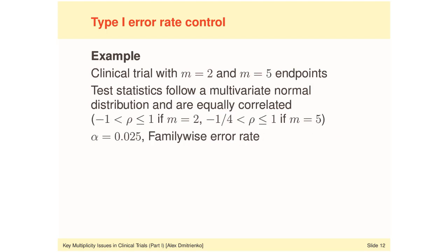As an illustration, consider a clinical trial with two or five endpoints — two extreme cases. We assume that the hypothesis test statistics follow a standard multivariate normal distribution under the global null, meaning all hypotheses are true. For simplicity, we assume the test statistics are equally correlated, giving a compound symmetry correlation structure. With two endpoints, the common correlation coefficient ranges between negative 1 and positive 1. With five endpoints, the lower bound for the common correlation coefficient is negative 1 over 4, or negative 0.25.